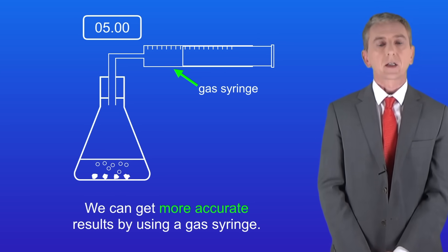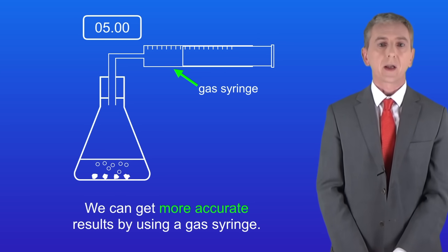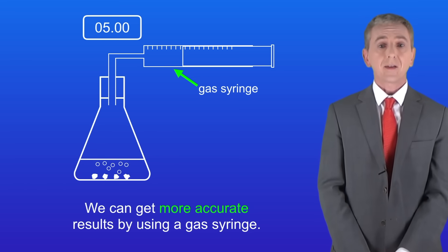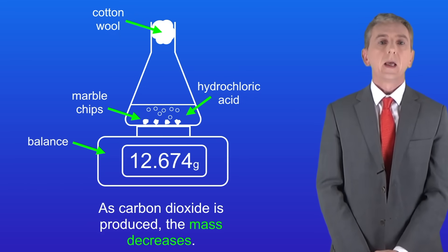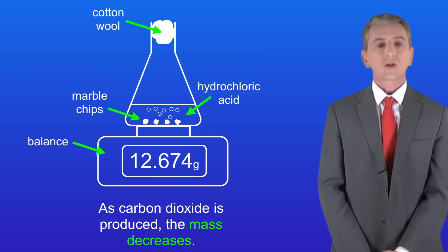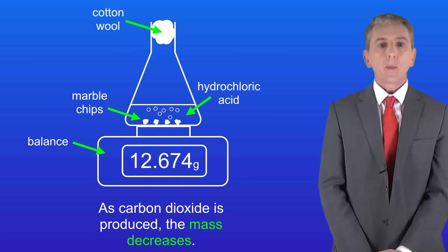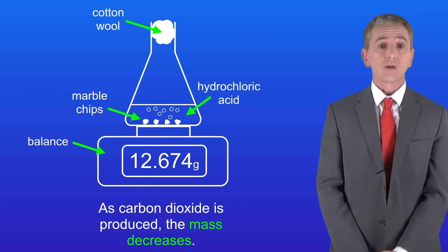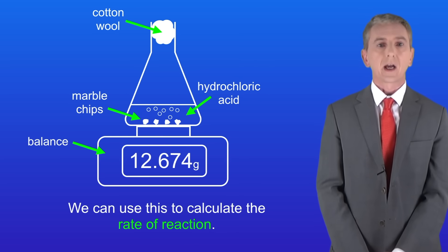Another way of carrying out this practical is by measuring the mass of carbon dioxide gas that's lost, and I'm showing you that setup here. In this experiment we place our reaction on a balance. As carbon dioxide is produced the mass decreases. We can use this to calculate the rate of reaction.